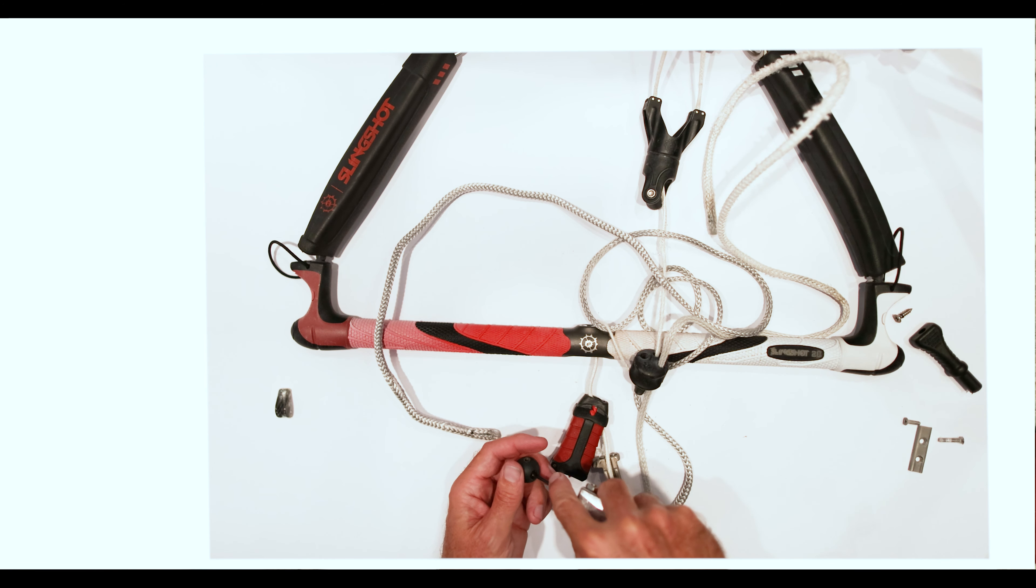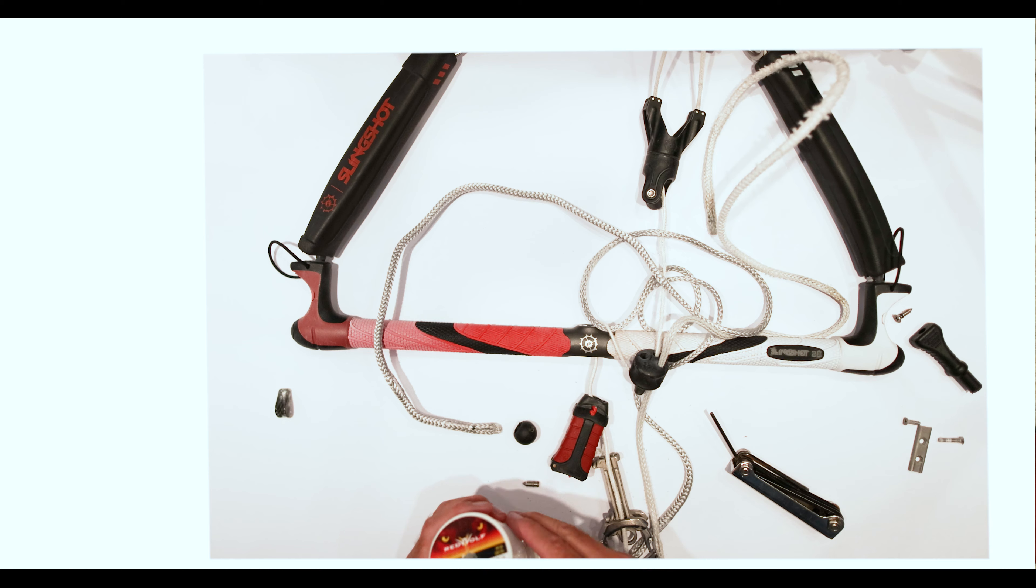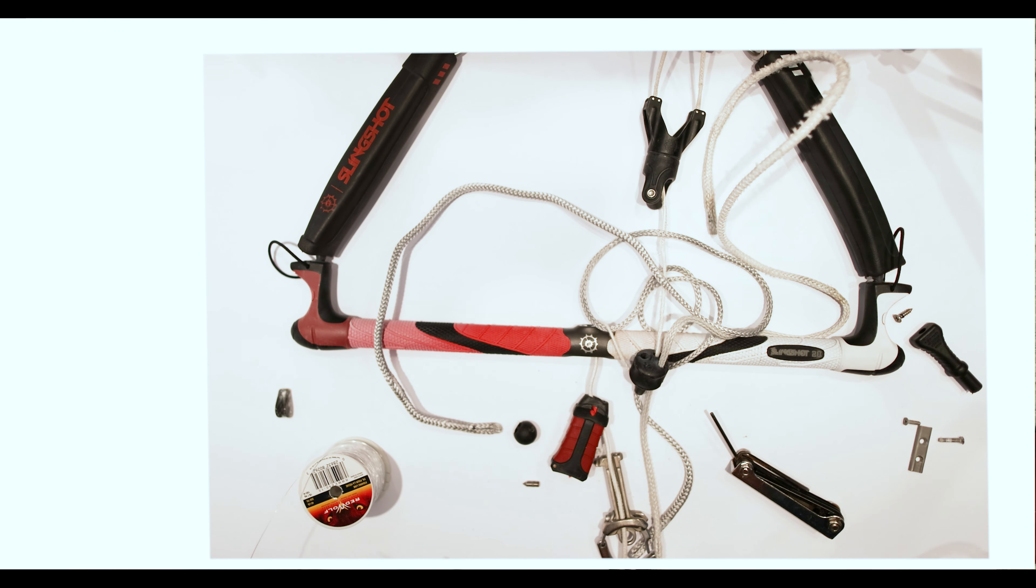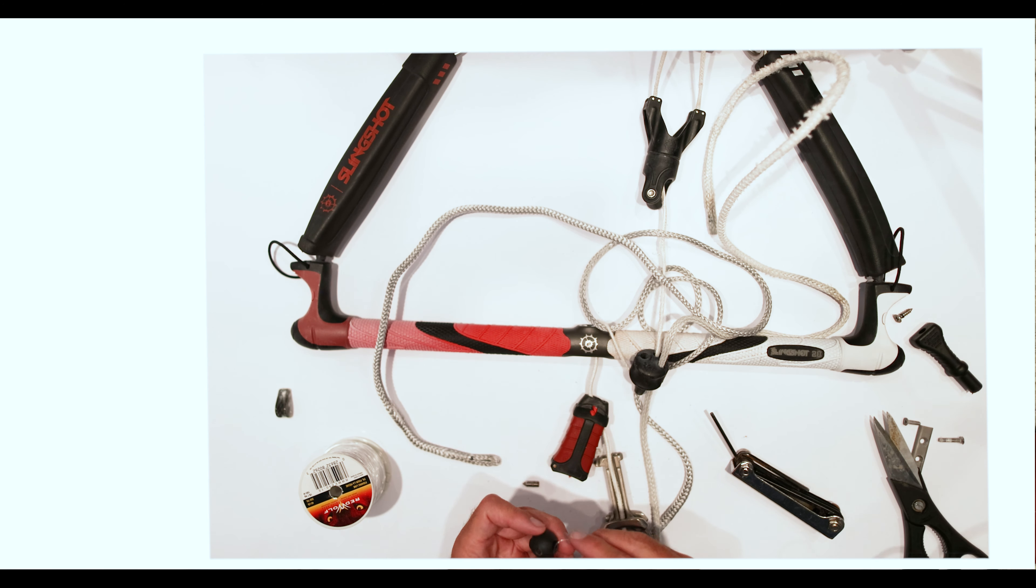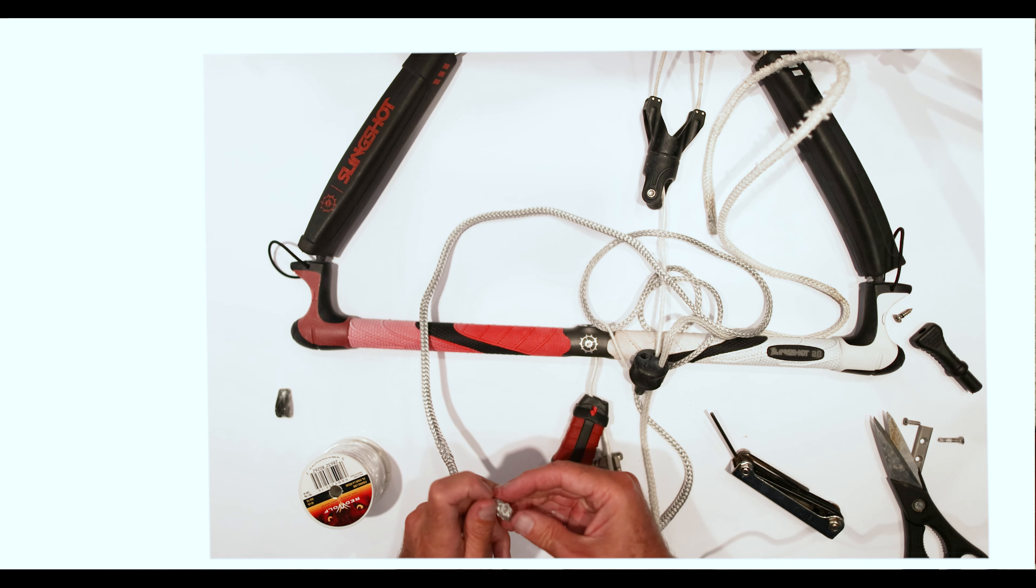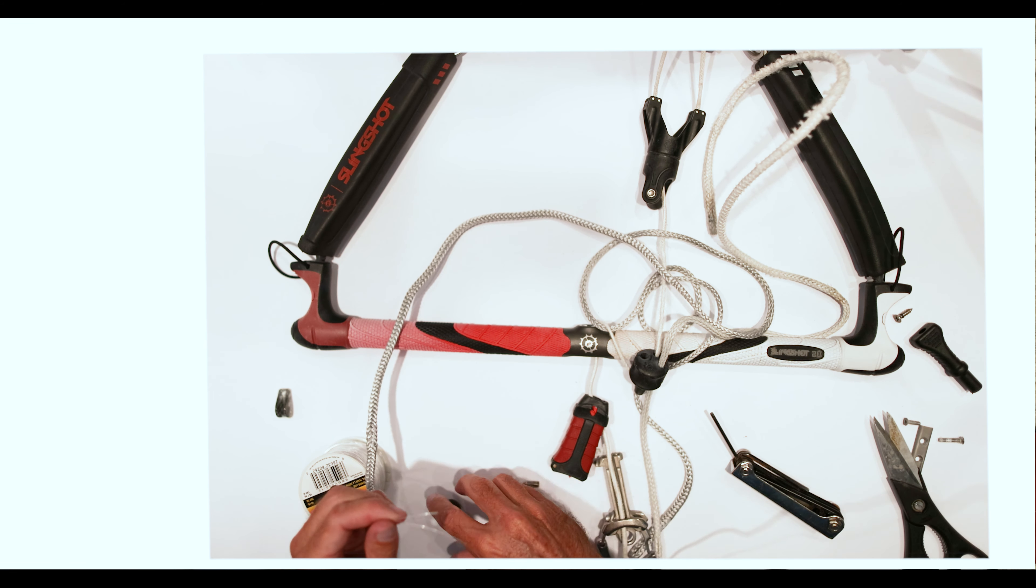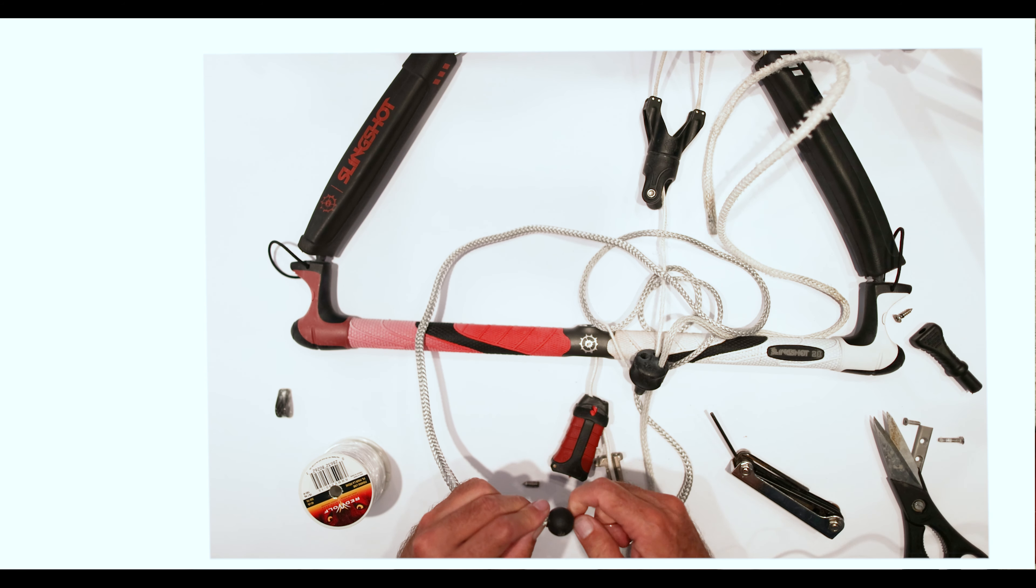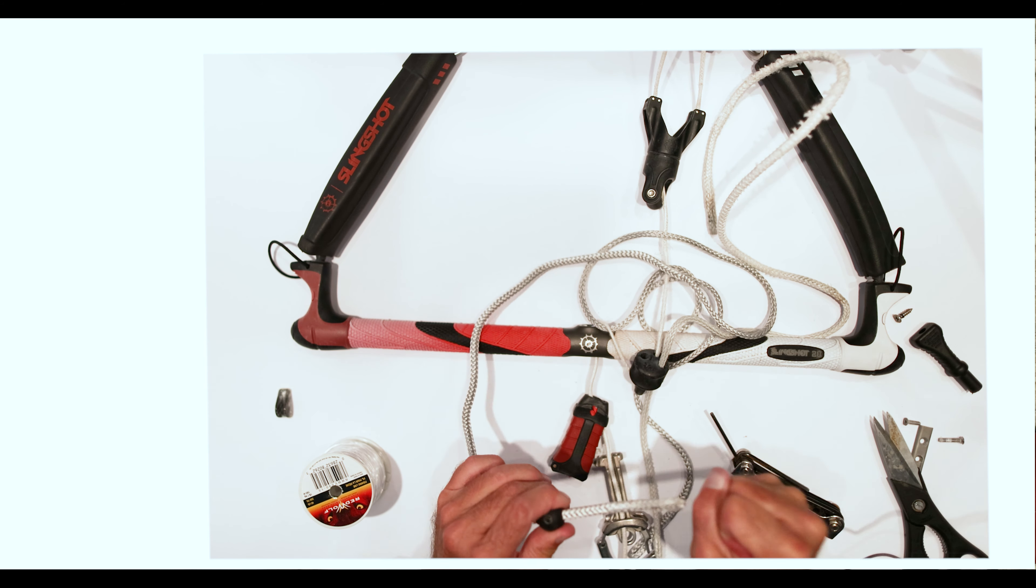So it helps to take the screw out and then you really got to get this clear so you can get a line through there. Another good way to do it is to get some fishing line and a pair of scissors. Aptly named fishing line because we're going to use it as a fish.